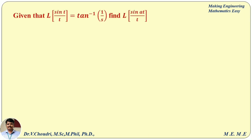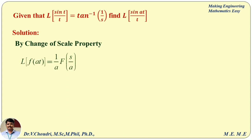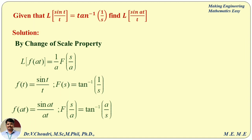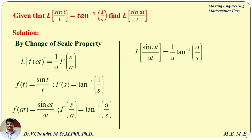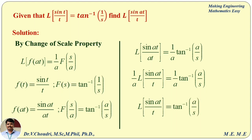Example using change of scale property: Given L of sin(t)/t = tan⁻¹(1/s), find L of sin(at)/t. By change of scale property, L of f(at) = (1/a)·F(s/a). Here f(t) = sin(t)/t and F(s) = tan⁻¹(1/s). So f(at) = sin(at)/(at) and F(s/a) = tan⁻¹(1/(s/a)) = tan⁻¹(a/s). Therefore L of sin(at)/(at) = (1/a)·tan⁻¹(a/s). Multiplying both sides by a and cancelling 1/a, we get L of sin(at)/t = tan⁻¹(a/s), which is the required result.